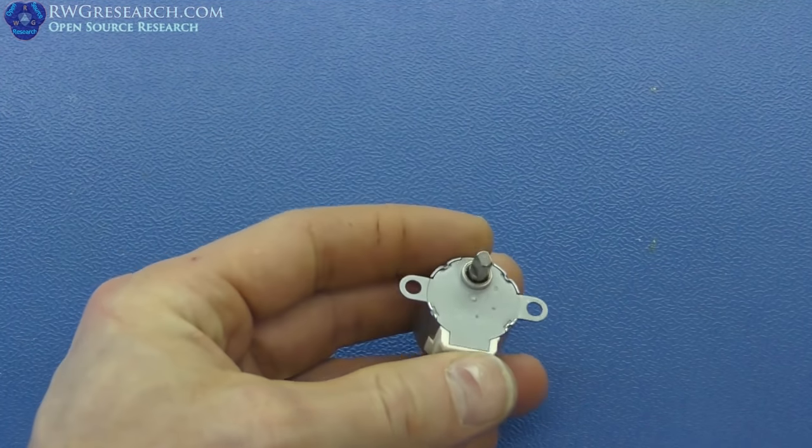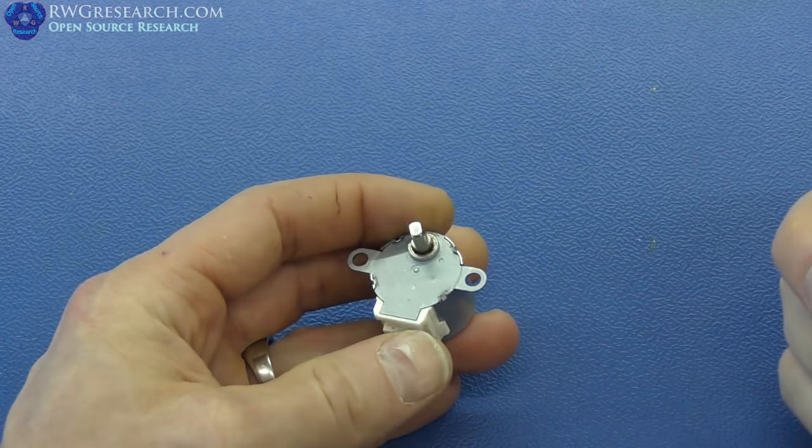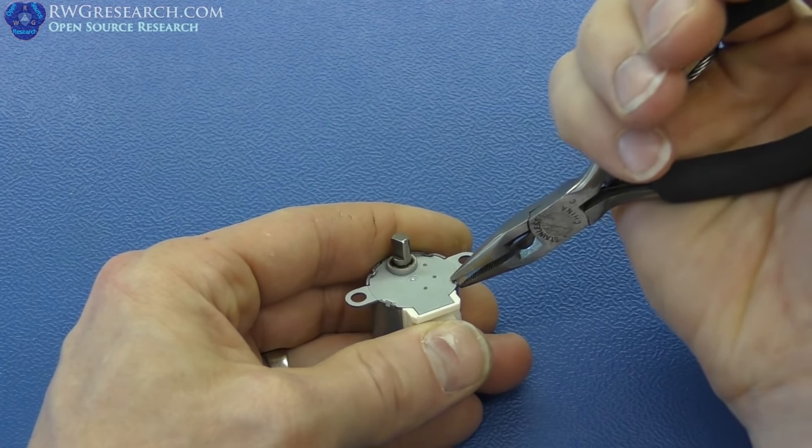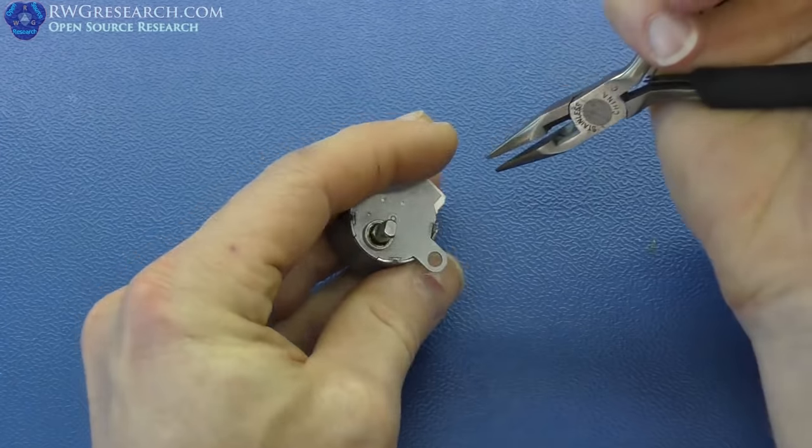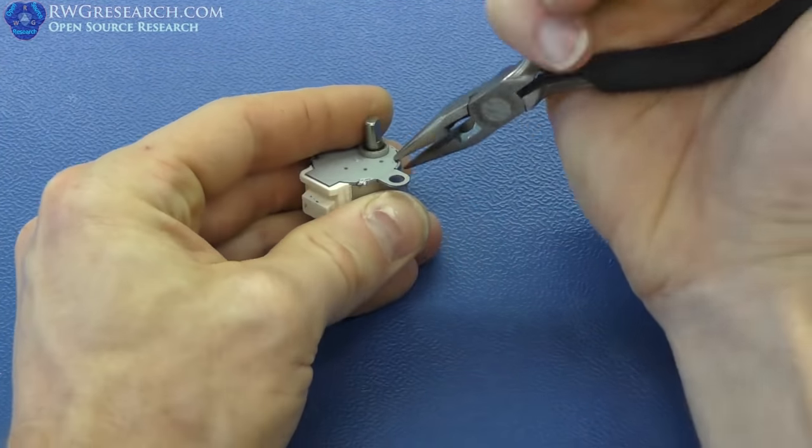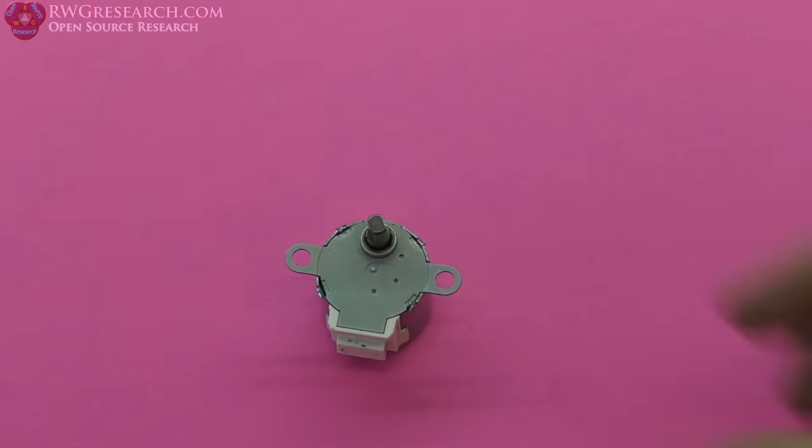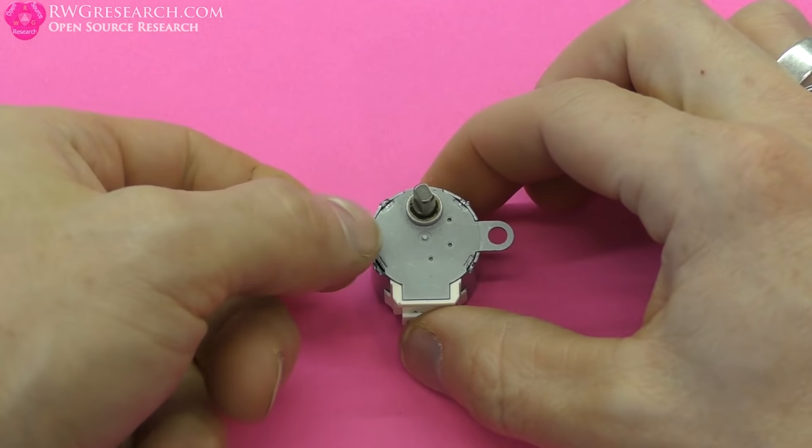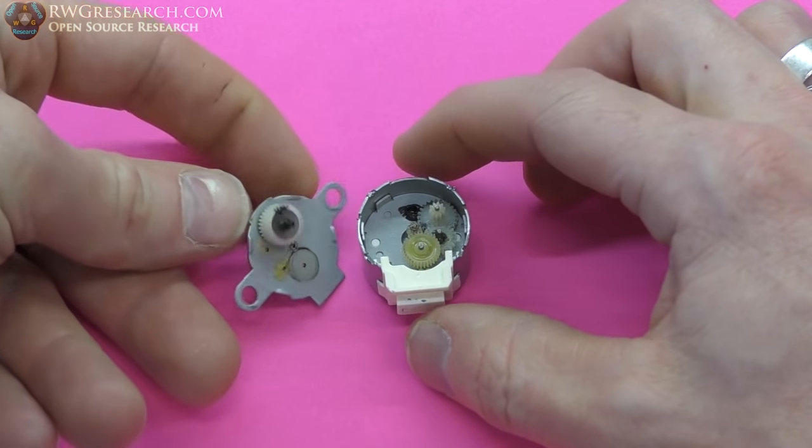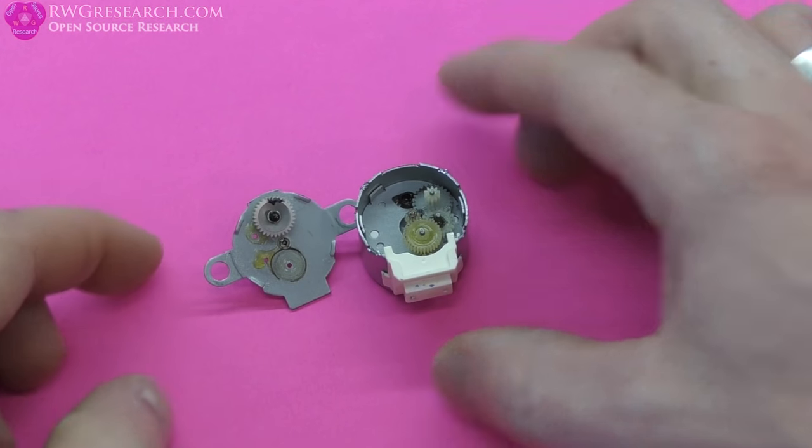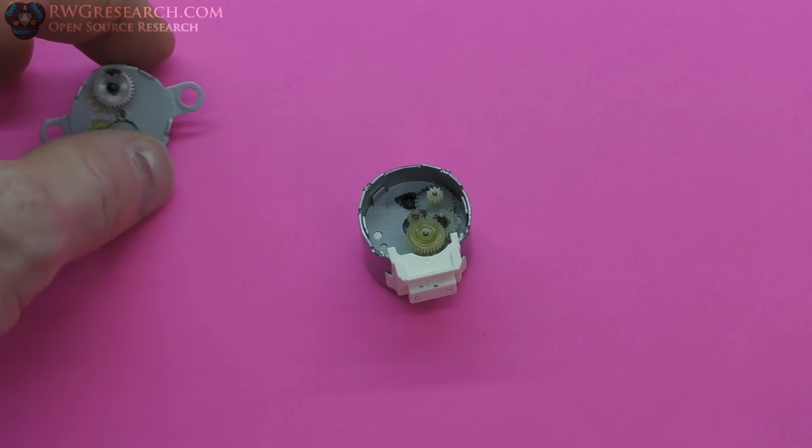So on this particular version, there's tabs on here. And I'm just going to try to pull those tabs open because I want to be able to put this back together. So let's see if I can grab those and bend them out without ruining everything. There we go. Got the tabs loose. Let's take it apart. All right, got my hot pink background. Now I can see what I'm doing. So let's pull this thing apart.